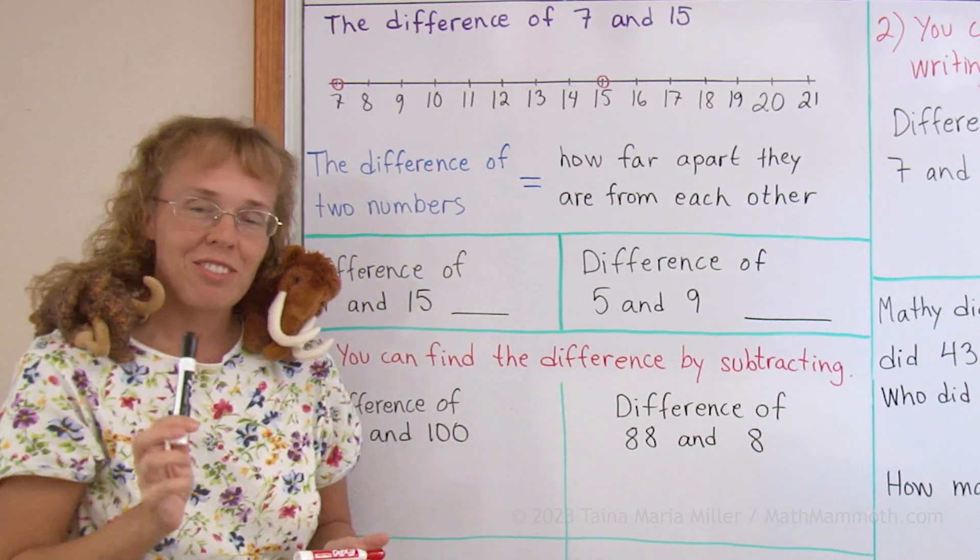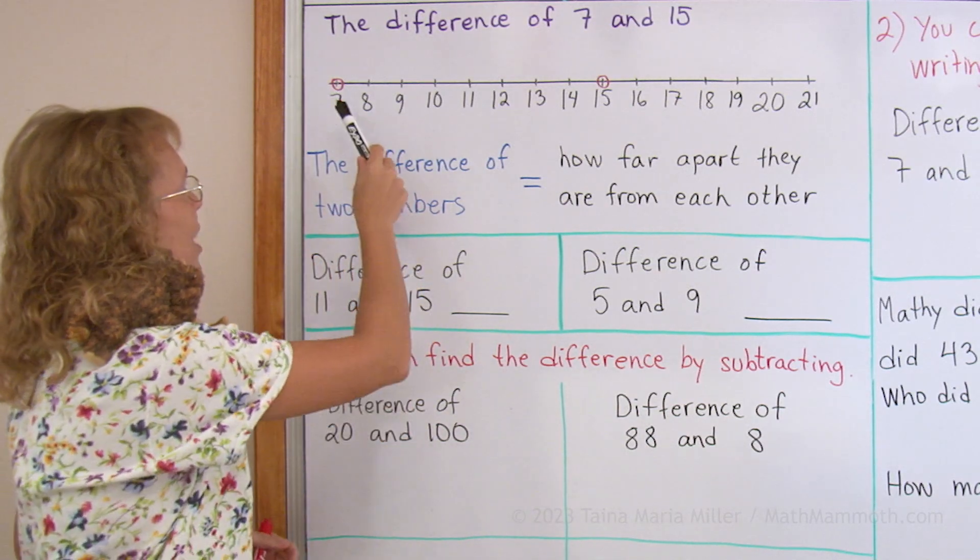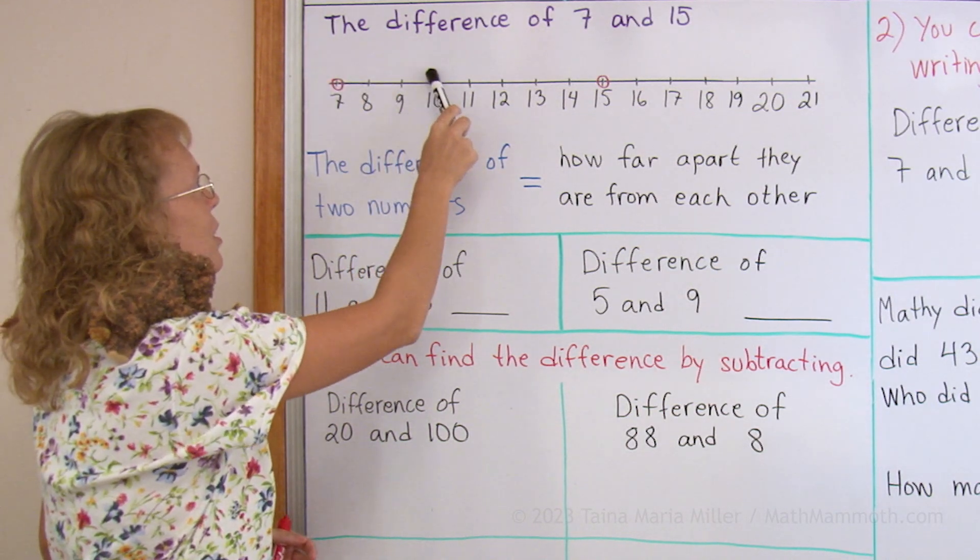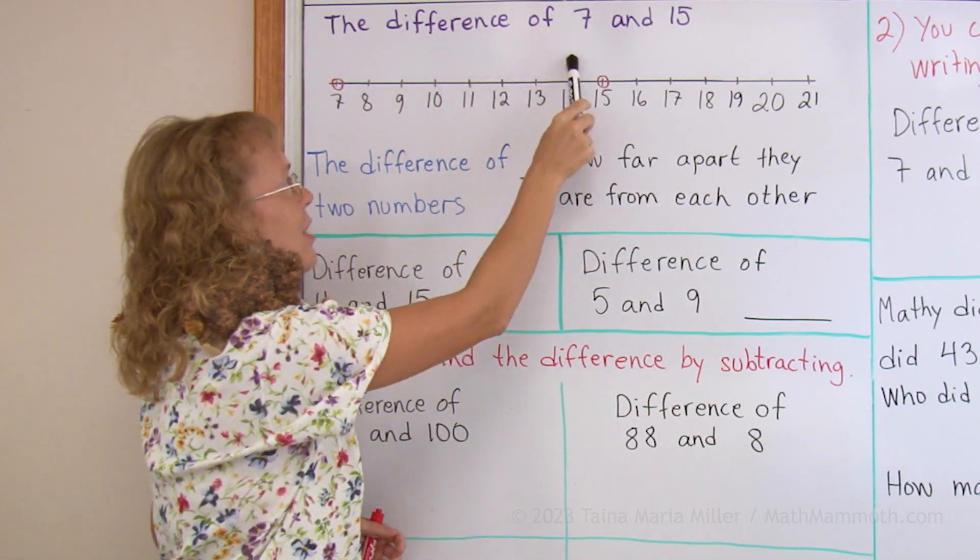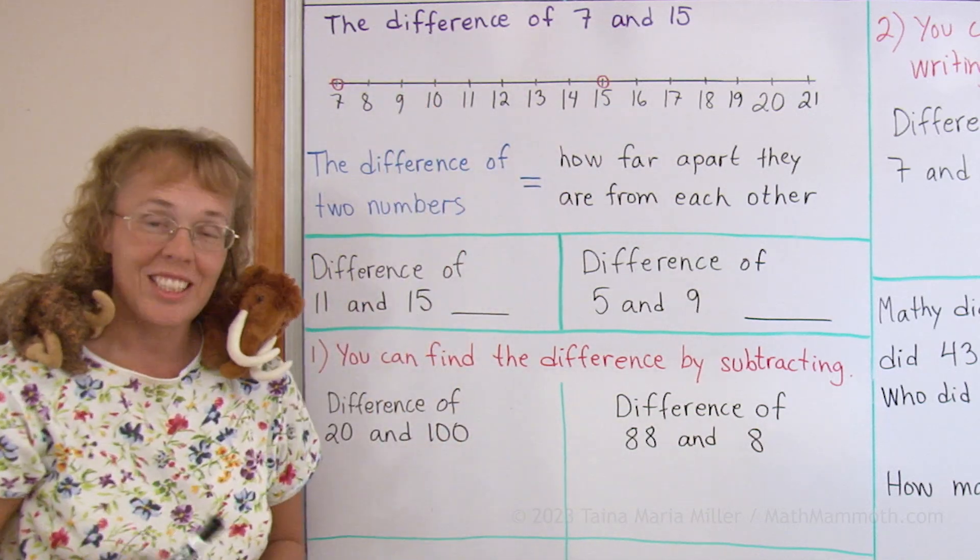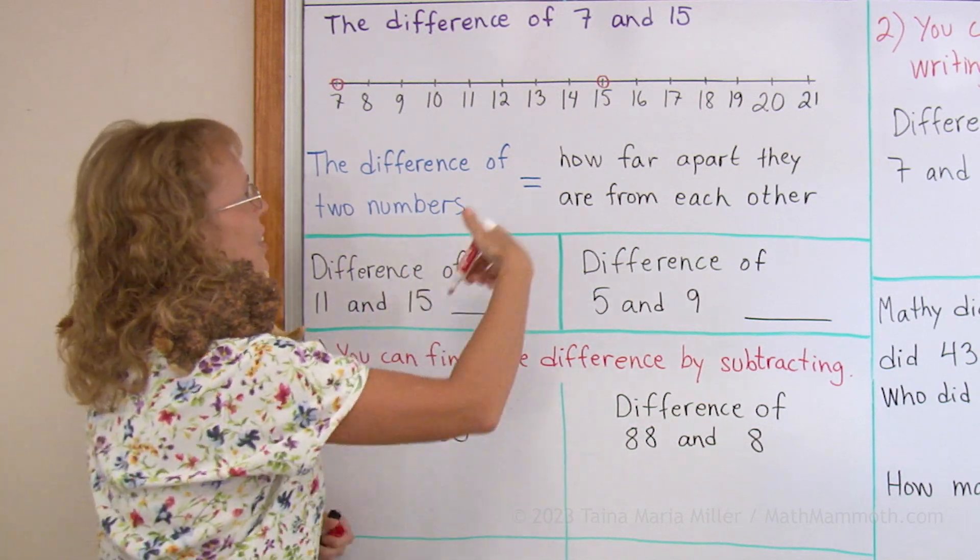So the difference of 7 and 15, I can count on the number line how many steps there are to take from 7 to 15. If I'm here, I go 1, 2, 3, 4, 5, 6, 7 and 8 steps. Or I could travel from 15 to 7 and find the same, 8 steps. The difference is 8.